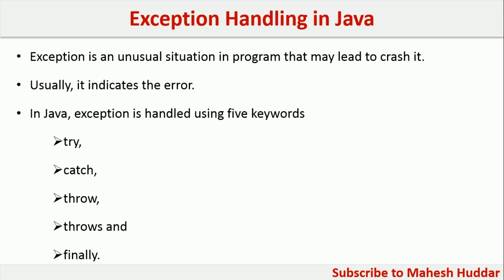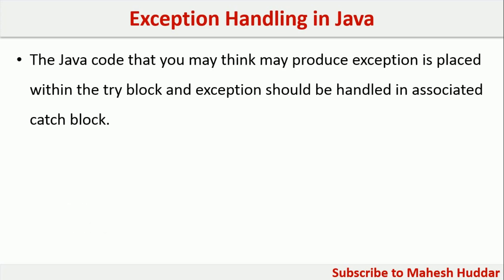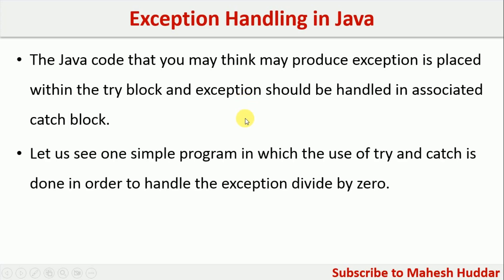In this video, we will discuss how to use these keywords to handle exceptions in Java. The Java code that you think may produce an exception or behave unusually — we need to put those statements into a try block and we need to have an associated catch block to handle that exception. Let us take a simple example to understand how exception handling works in Java with the help of try and catch blocks.